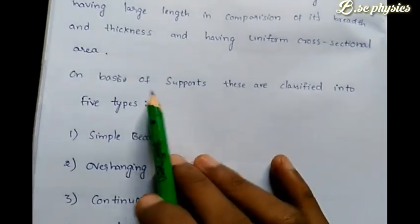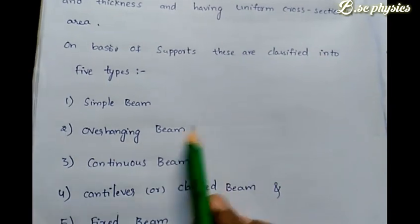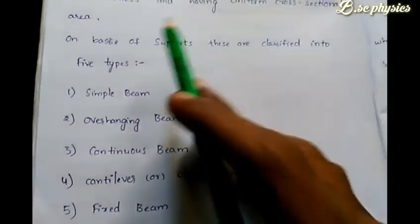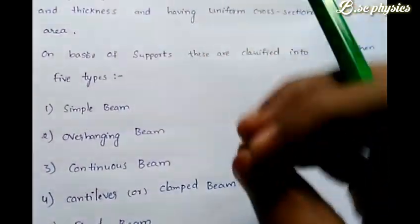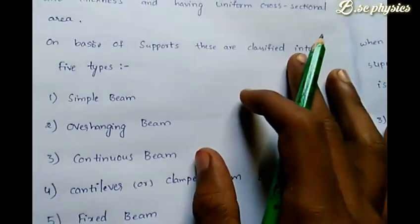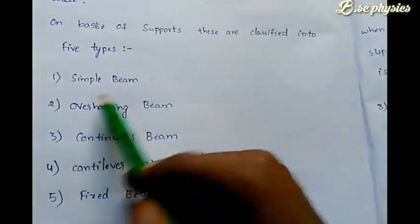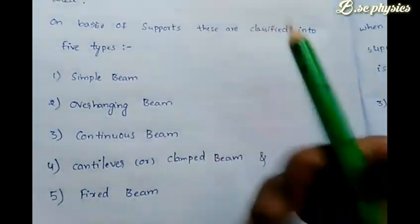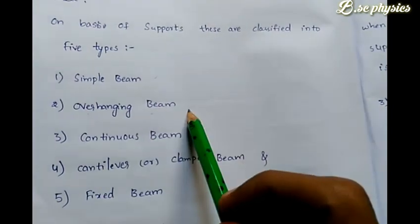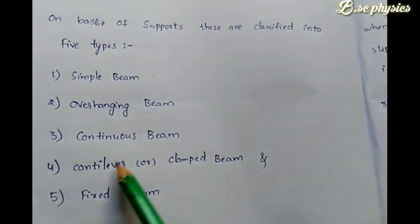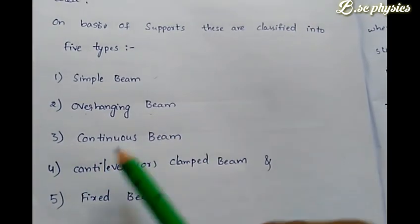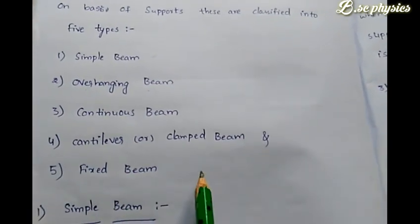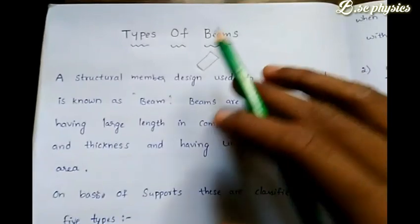The five types of beams are: simple beams, overhanging beams, continuous beams, cantilever or clamped beams, and fixed beams. So we have five types of beams in total.